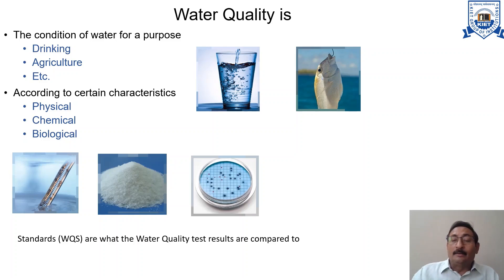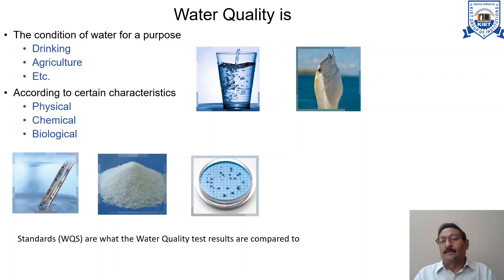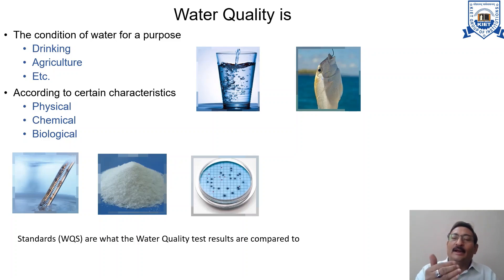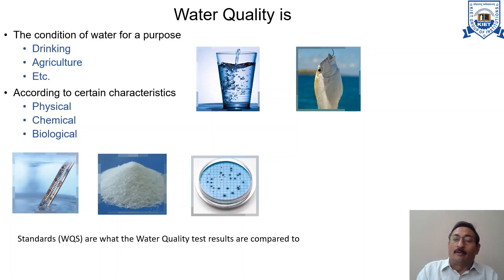Water quality is measured by comparing it against some standard, known as water quality standards. According to certain characteristics, water quality is divided into three broad categories: physical water quality parameters, chemical water quality parameters, and biological water quality parameters.